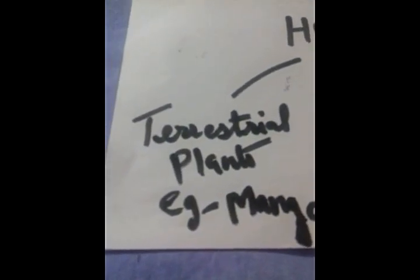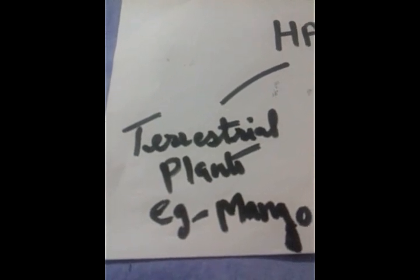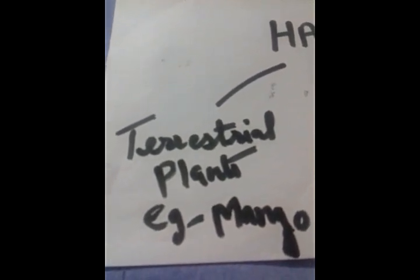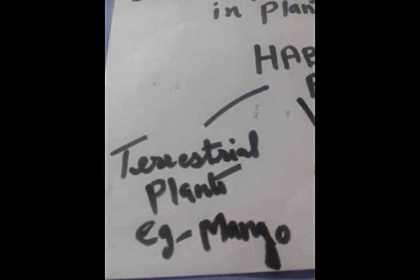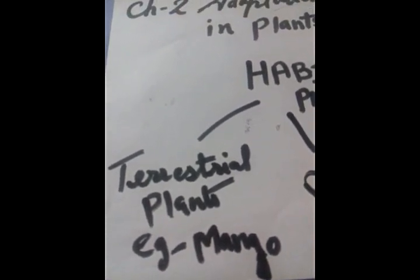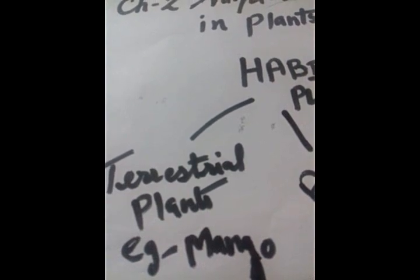First we will see terrestrial plants — those plants which live on land. These are further divided into some groups: hilly, marshy, and coastal. First we will see which type of plants grow in plains. In plains the climate is warm to hot in summer and cold in winter. The trees growing here have many branches. These trees shed their leaves in autumn and bear new leaves in spring. For example, mango, neem, peepal, and shisham grow in plains. This is a picture of a neem tree.